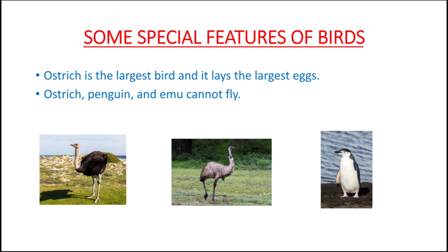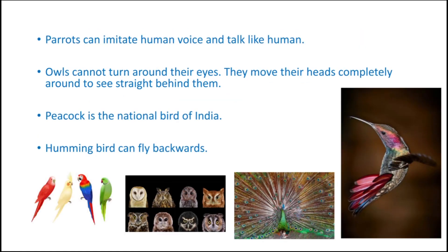Now we have come to the end of the chapter. We will learn about some special features of birds. The ostrich is the largest bird and it lays the largest eggs. Ostrich, penguin, and emu cannot fly — they are flightless birds. Parrots can imitate human voice and talk like humans — have you ever seen a parrot talking? You can try talking with them. Owls cannot turn their eyes, so they move their heads completely around to see behind them. It's so amazing!